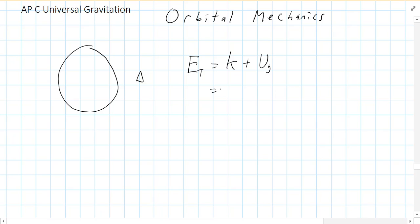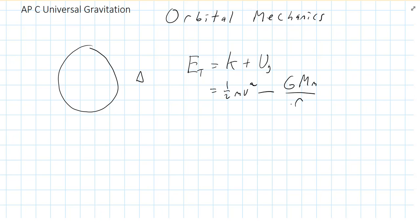This equals one-half mv squared. Now m is the mass of the ship. And remember, potential energy is always negative, so we've got minus big G, mass of the planet, mass of the ship, over how far they are apart center to center. That's the total energy of the Earth or planet-ship system — just a combination of potential and kinetic energy.